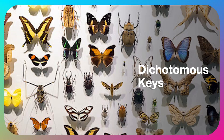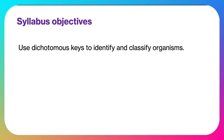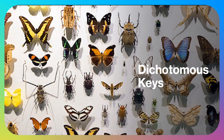Let's have a look at dichotomous keys. This is a syllabus objective: to be able to use dichotomous keys to identify and classify organisms. Importantly, you don't need to be able to create a dichotomous key — you just need to be able to use one.